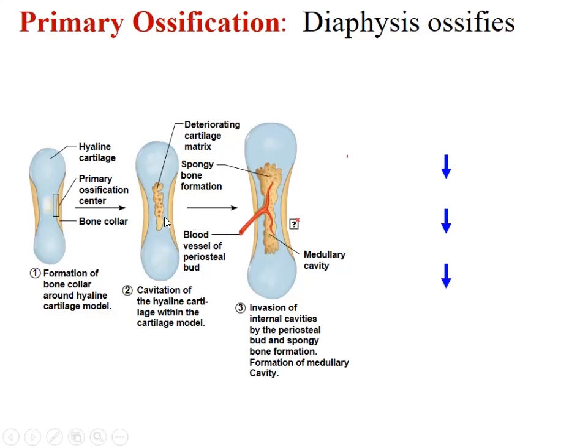Osteoblasts will then come in and basically kill the cartilage cells — it's like a territory war. Here in this primary ossification center, right there in the diaphysis — the center shaft — this is the primary ossification center. Happening before birth. Osteoblasts will invade the chondrocytes, which are the mature cells of cartilage, and take over and then ossify, which means to mineralize the bone.